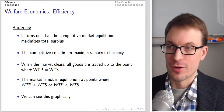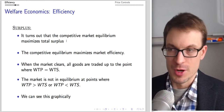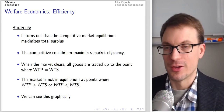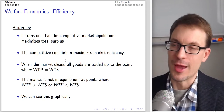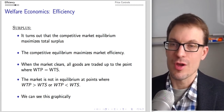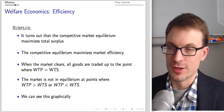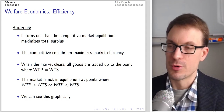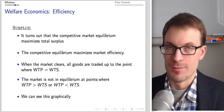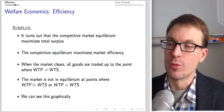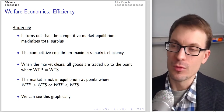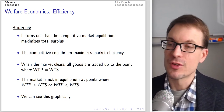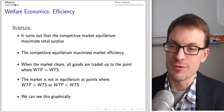It turns out our competitive market equilibrium maximizes total surplus and maximizes market efficiency — these are the same thing. When the market clears, all goods are traded up to the point where willingness to pay equals willingness to sell, where marginal benefit to consumers equals marginal cost of producers. The market is not in equilibrium where willingness to pay is bigger than willingness to sell — you should continue producing until these become equal.